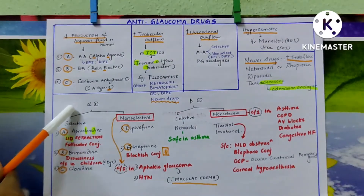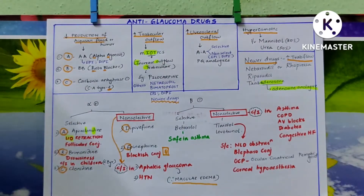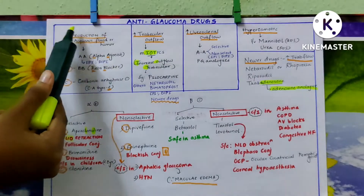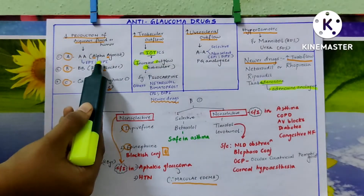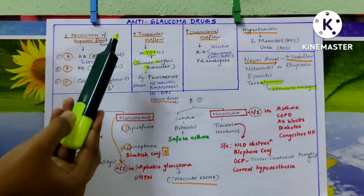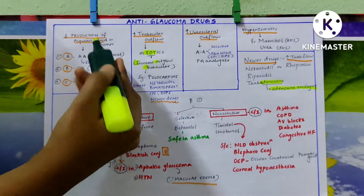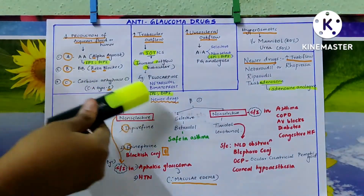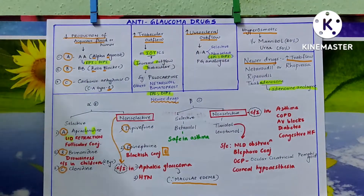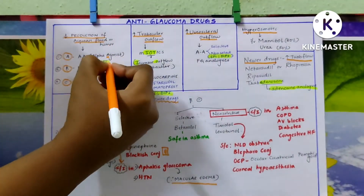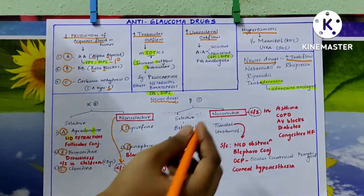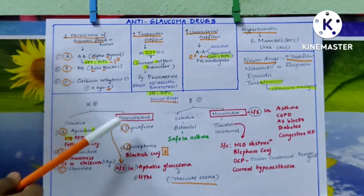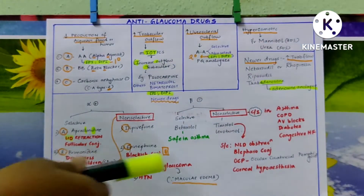The whole class of non-selective alpha agonists is contraindicated in aphakic glaucoma because they cause macular edema — increased risk of macular edema. They are also avoided in hypertension. Epinephrine and dipivefrine are involved in both decreased production of aqueous humor and increased uveosc leral outflow. So the primary mechanism of action of epinephrine and dipivefrine is decreased production of aqueous fluid, and increased uveosc leral outflow is the secondary mechanism.